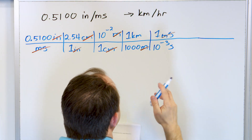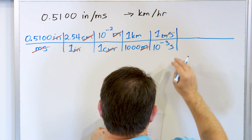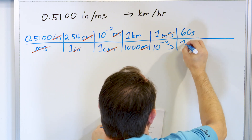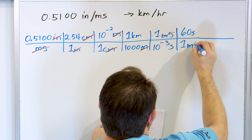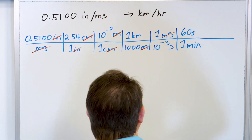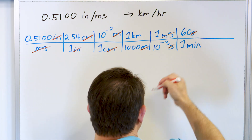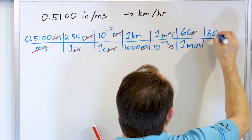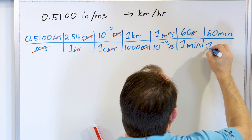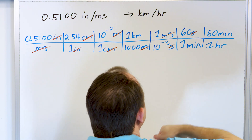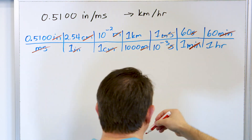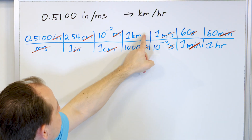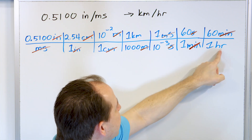Now I'm in seconds. To go to hours, I know that there are 60 seconds in one minute, and I arrange it so the seconds cancel. Now I have minutes, but I want hours. I know that 60 minutes is one hour, so the minutes cancel.